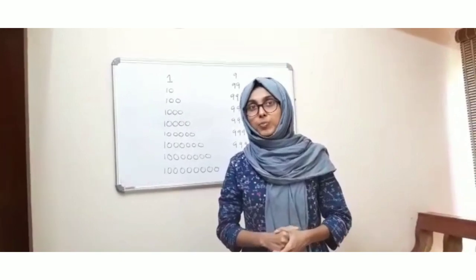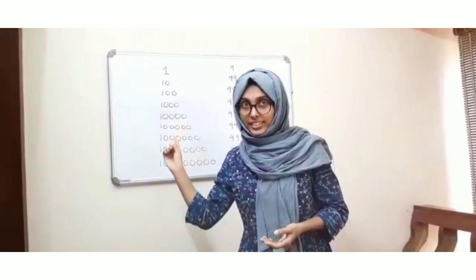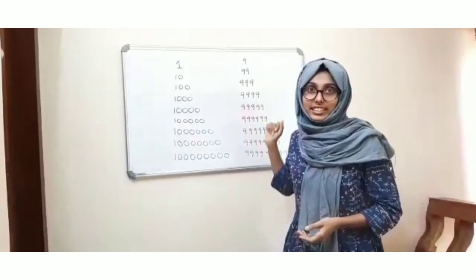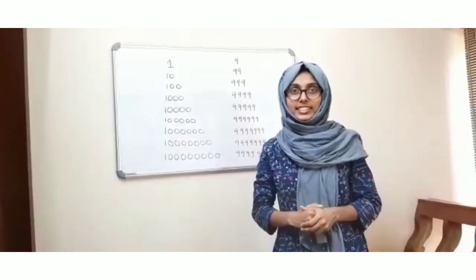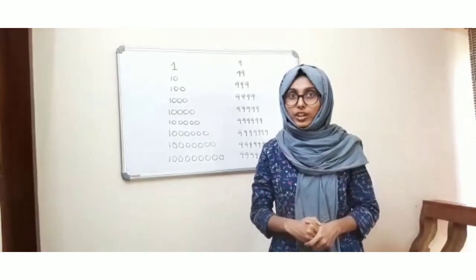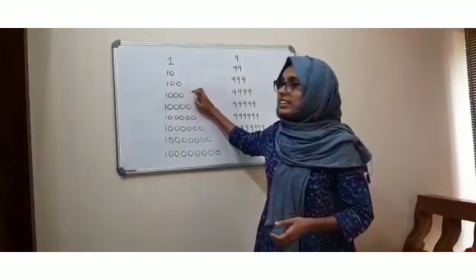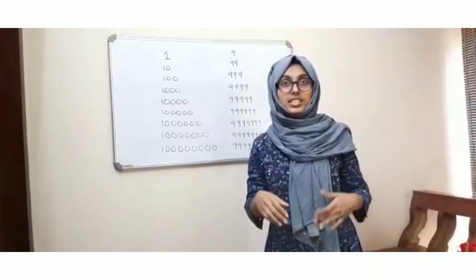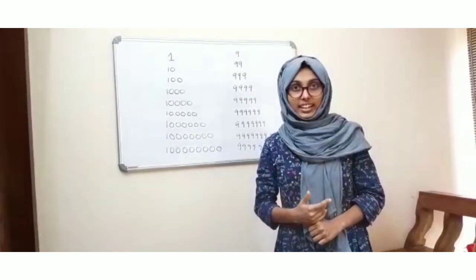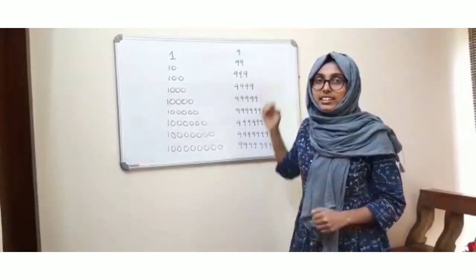Now among three-digit numbers, which is the smallest? It is 100. Which is the largest? It is 999. So now among four-digit numbers, the smallest number is 1000 and the largest will be 9999.